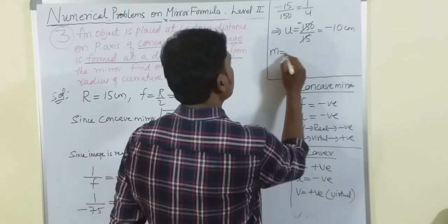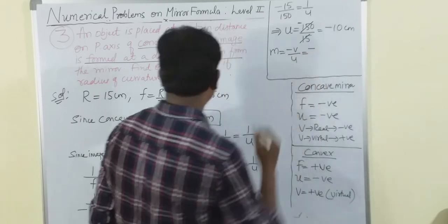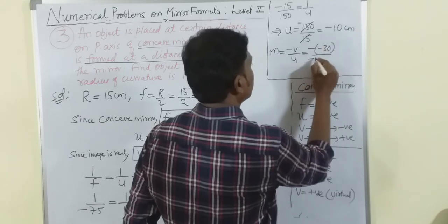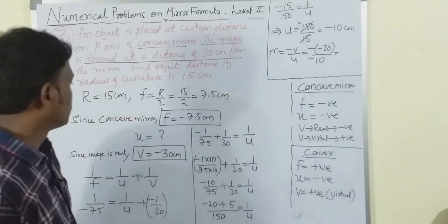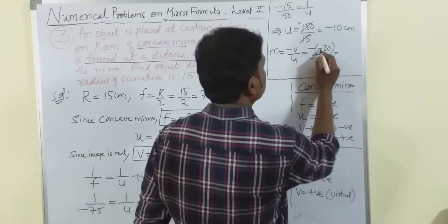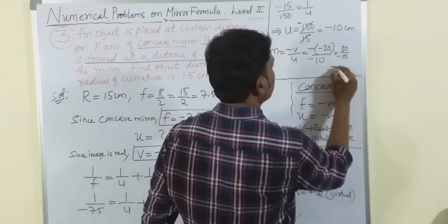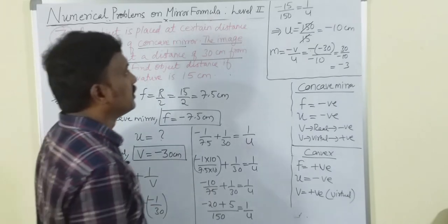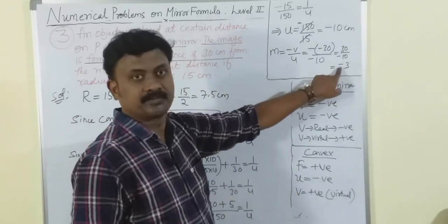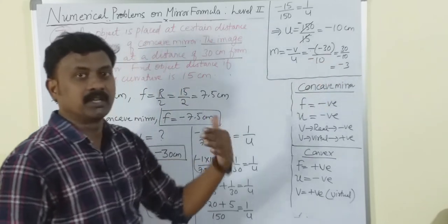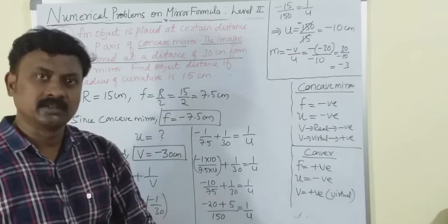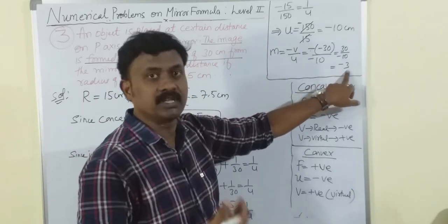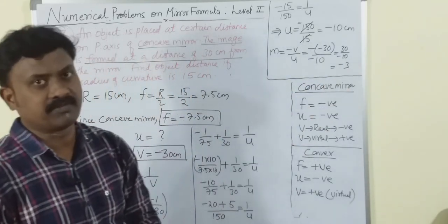Now finding magnification: m = -v/u = -(-30)/(-10) = -(30/10) = -3. So m = -3. Since m is negative, the image is inverted (real), and since the magnitude 3 is greater than 1, the image is magnified.